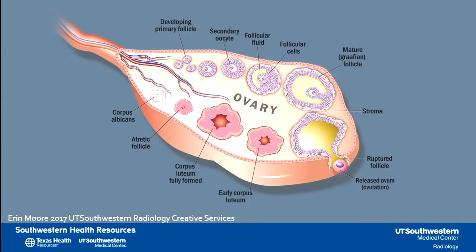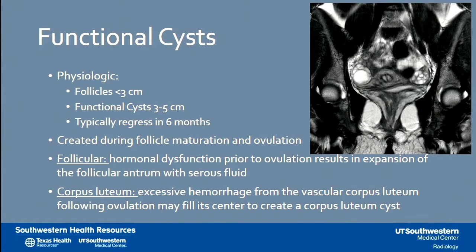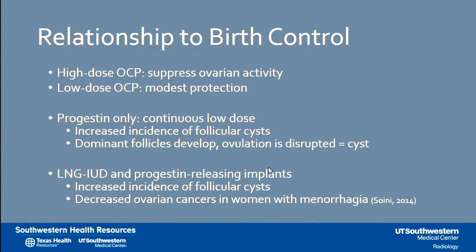Here's our ovary — every time a woman ovulates she's developing a follicle filling with fluid. If this gets disrupted in any way, she'll develop a functional cyst, a follicular cyst. After ovulation she has a corpus luteal cyst, another cyst we might see on imaging that is totally normal and may also appear during early pregnancy. We do use size and clinical history to help us determine which type it is.